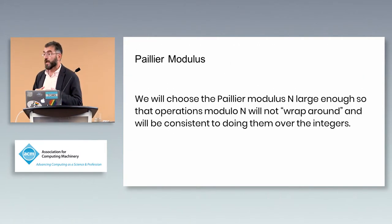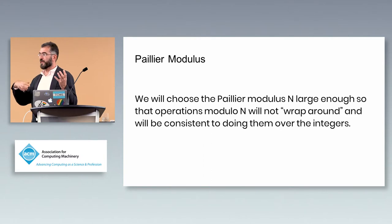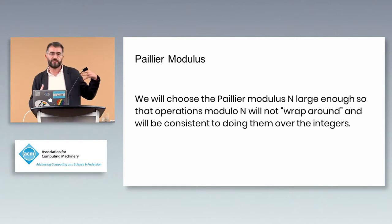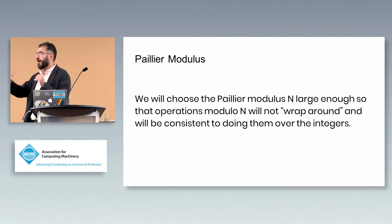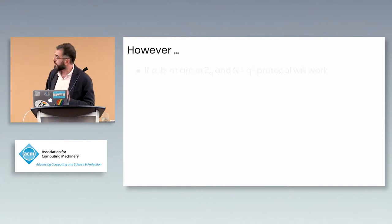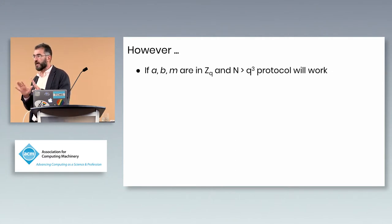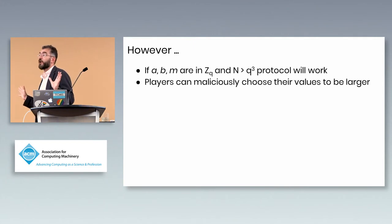An important subtlety: the DSA signature shares work modulo q, but Paillier encryption uses an RSA modulus N — so there's a mismatch. To avoid wraparound, we use a very large N. Specifically, since our numbers are between 0 and q, choosing N > q³ guarantees that no wraparound occurs and all arithmetic happens over the integers. This is only safe if parties are honest.